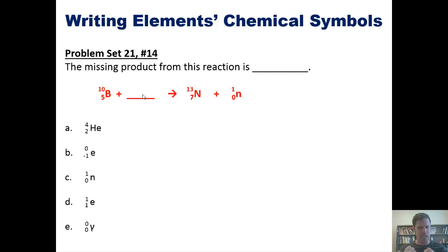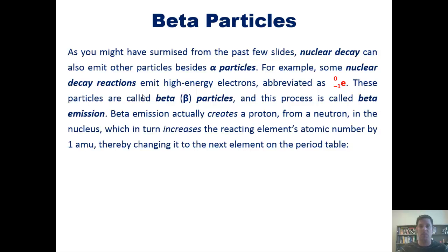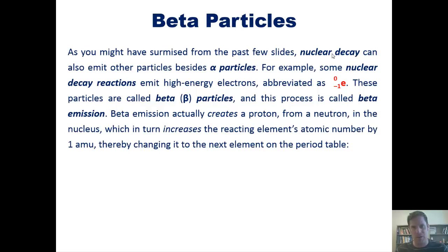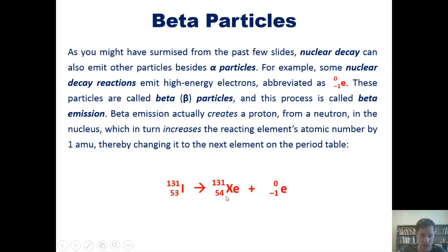We now turn to beta particles. Nuclear decay can emit other kinds of particles besides alpha particles. Some nuclear decay reactions emit high-energy electrons, abbreviated with a 0 up top and a negative 1 down bottom. These particles are called beta particles, and this process is called beta emission. Beta emission actually creates a proton from a neutron in the nucleus, which increases the reacting element's atomic number by 1, thereby changing it to the next element to the right on the periodic table. For example, if iodine emits a beta particle, it mathematically creates xenon. Xenon has one more proton than iodine. Mathematically, 54 plus negative 1 equals 53, which is the atomic number of iodine.